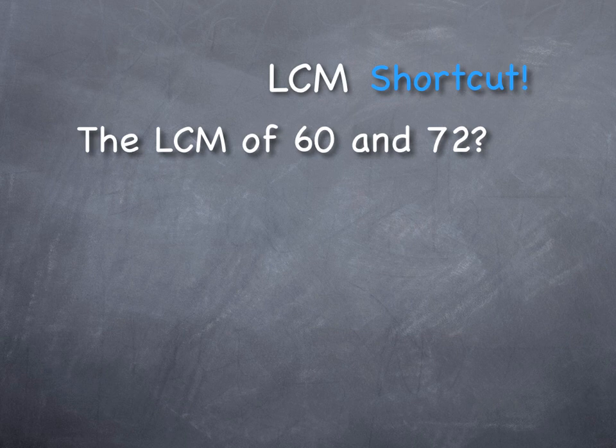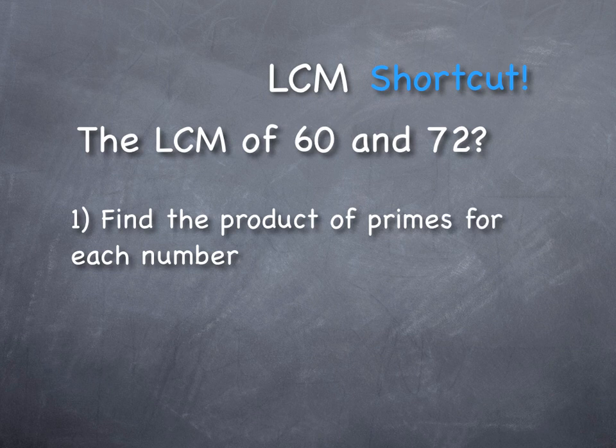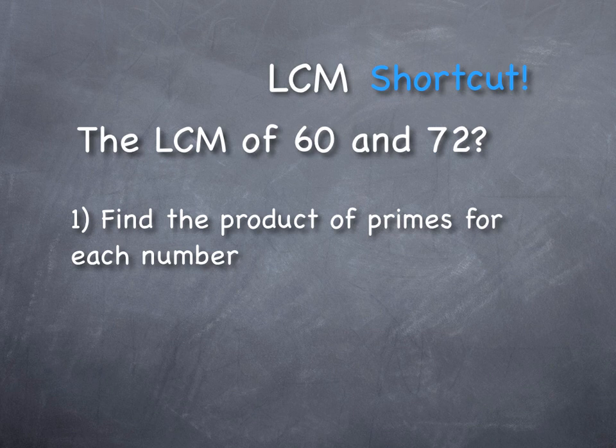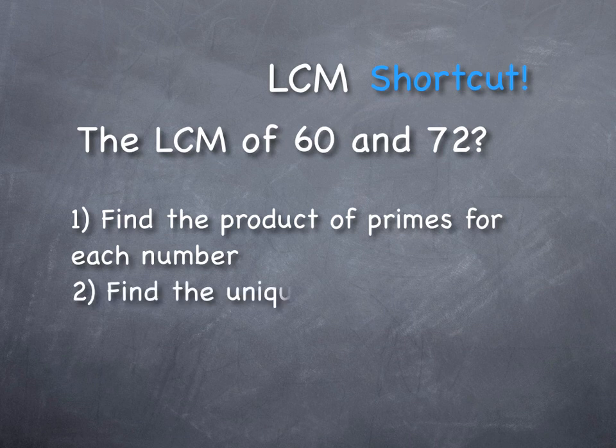So the shortcut is do the same thing that we did for the highest common factor. Find the product of primes. Find the product of primes for each number. That's the same as finding the highest common factor shortcut.